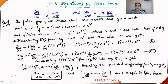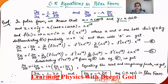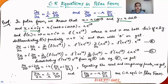Let's see how we arrive at the CR equations in polar form. We know that Cartesian coordinates can be expressed in polar form as x = r cosθ and y = r sinθ. A complex variable z is represented as x + iy. Substituting, we write z = r cosθ + ir sinθ = r(cosθ + i sinθ), and since cosθ + i sinθ = e^(iθ), we get z = re^(iθ).